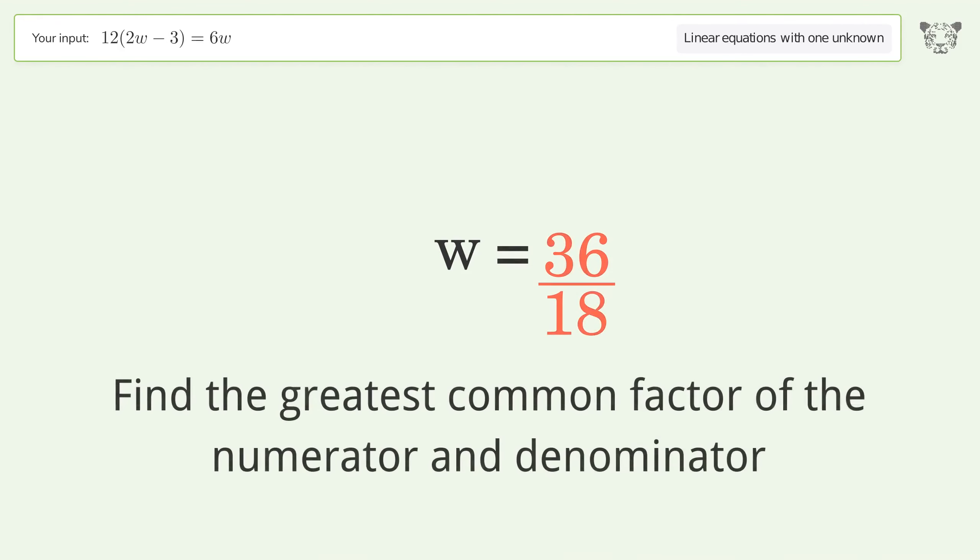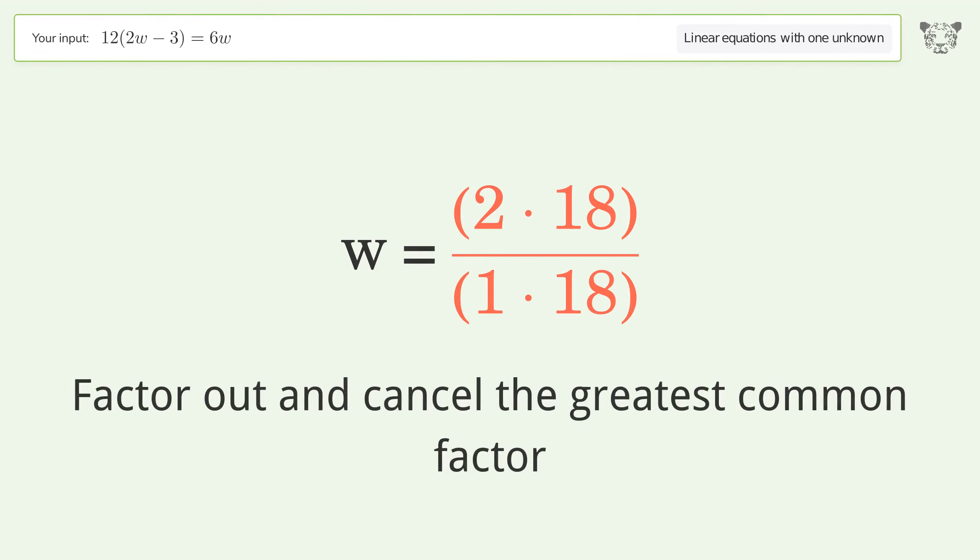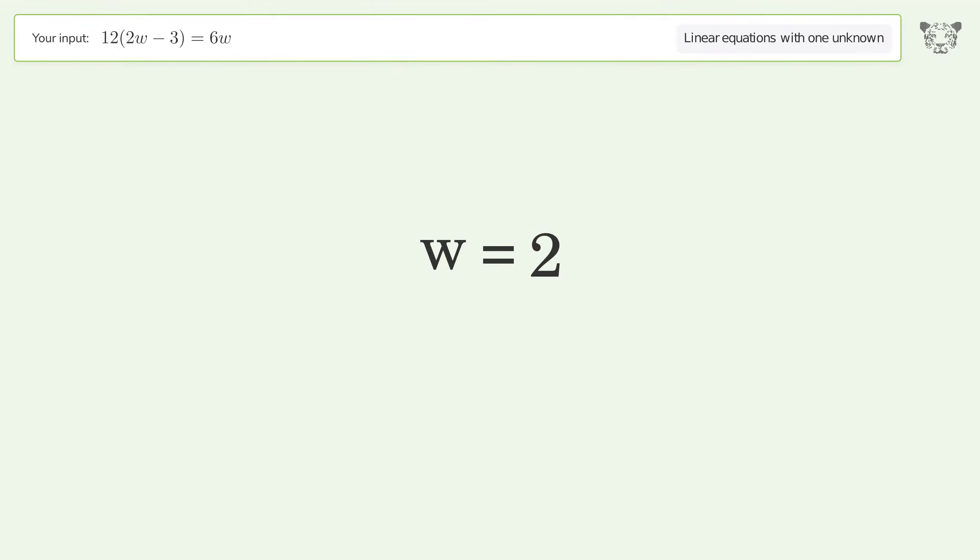Find the greatest common factor of the numerator and denominator. Factor out and cancel the greatest common factor. And so the final result is w equals 2.